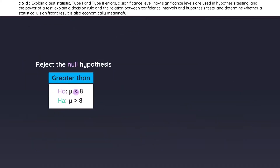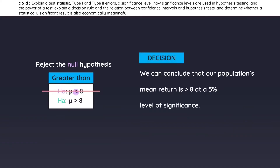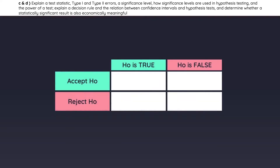Now that we've rejected the null, you can confidently say that the population's mean is above 8%. Now let's go over a few key concepts before we continue with hypothesis testing.